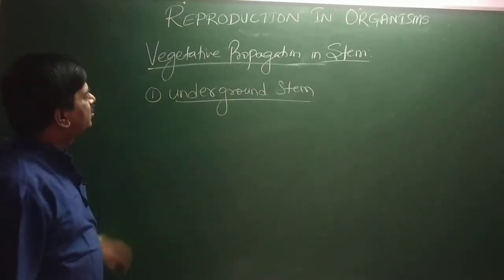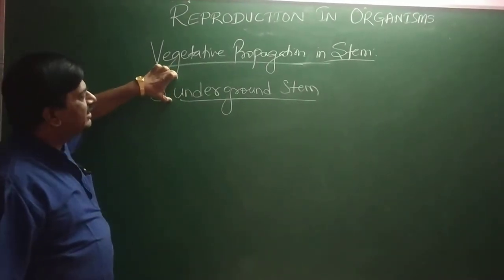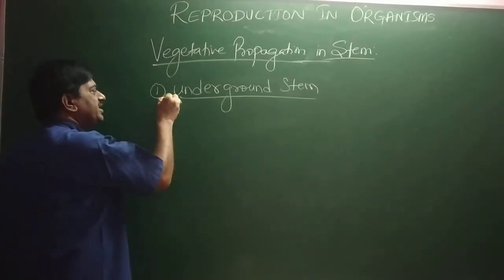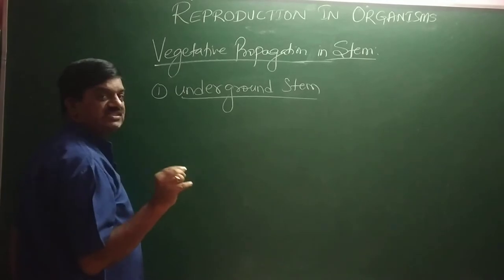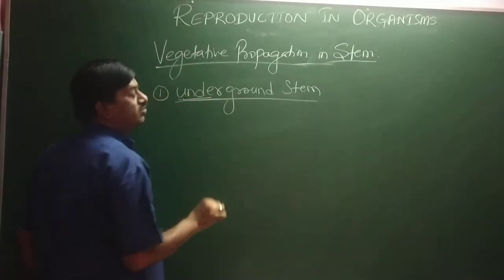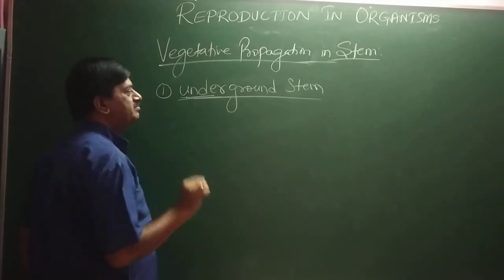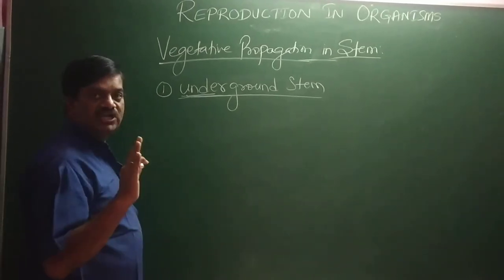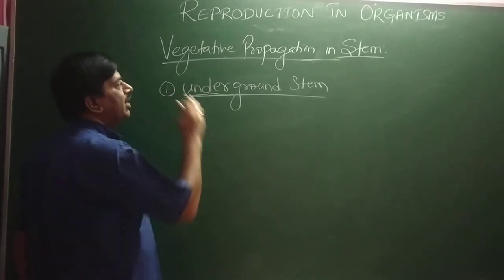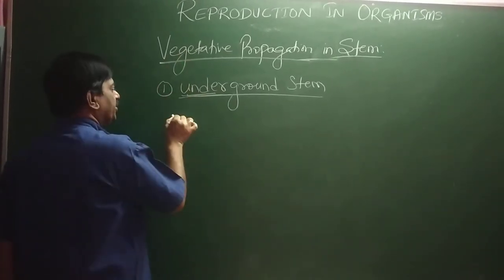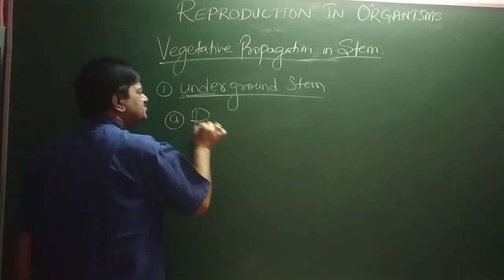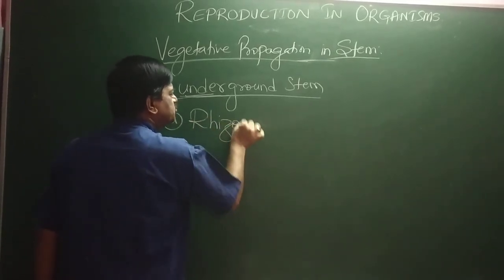We are discussing how the underground stem helps in vegetative propagation. This stem is below the ground, hence it is called underground. But we still call it a stem because it has nodes and internodes. Now we will discuss how this underground stem undergoes vegetative propagation. The first type is called rhizome.